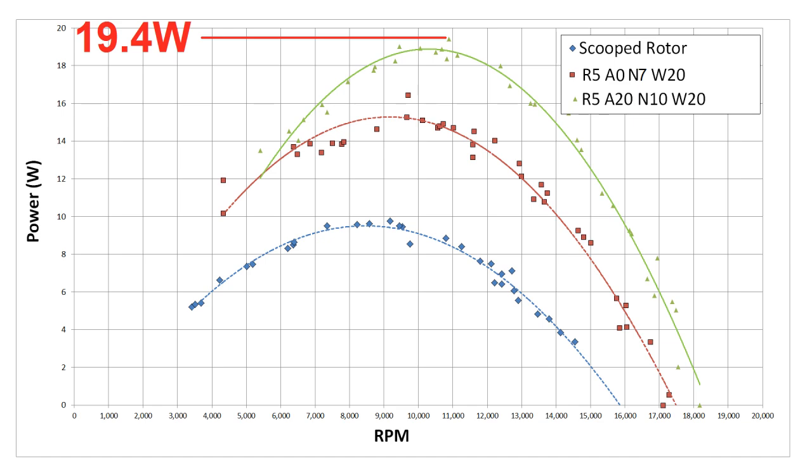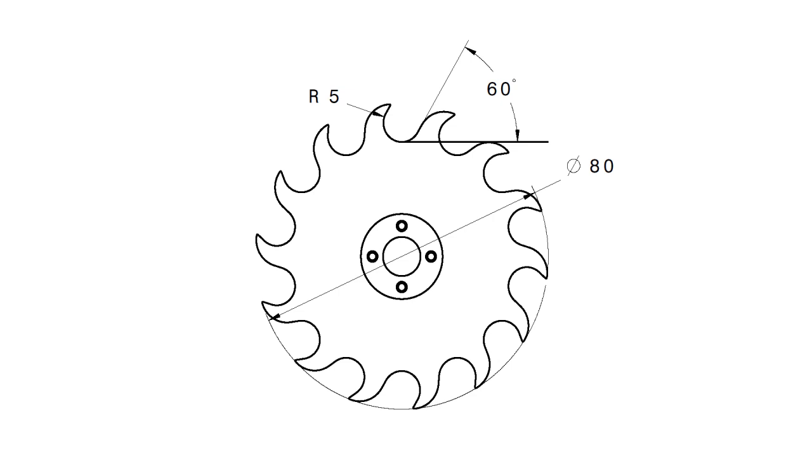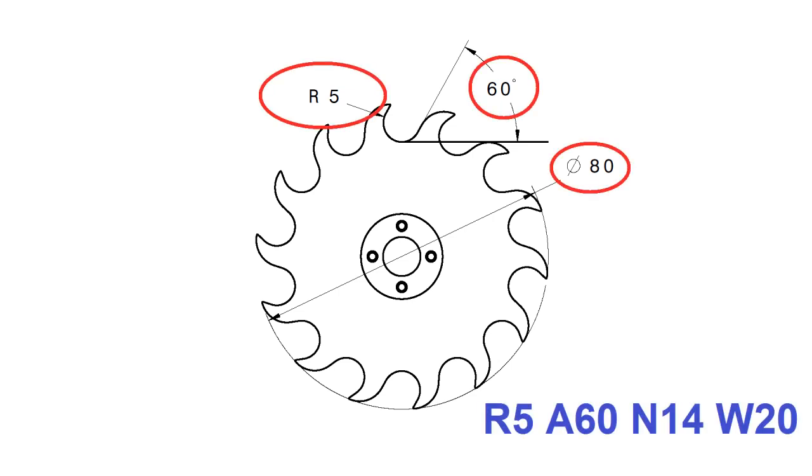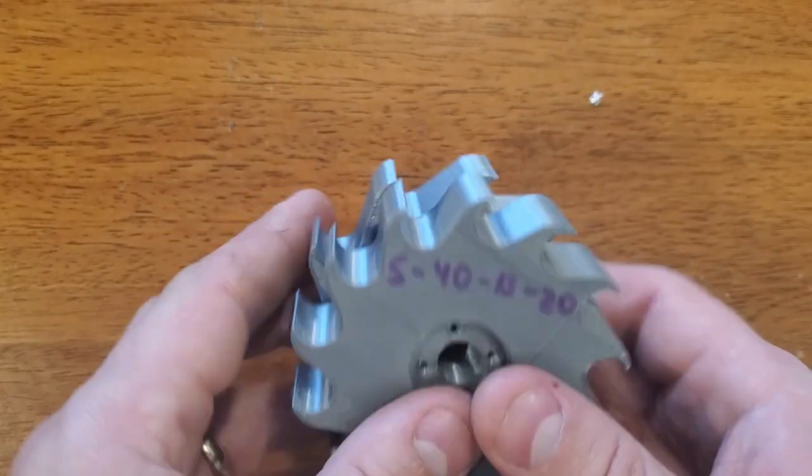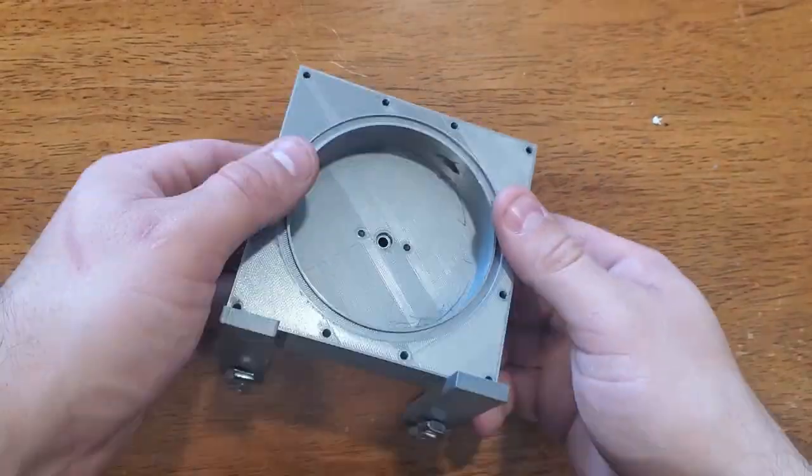So naturally I figured it only made sense to test with even more blades, so the next one I did was a 14-bladed design with a 60 degree notch angle. The notch angles get steeper as the blade count increases, because you start having to cut them radially instead of at a tangent. 14 was about as many as I could fit without moving to a smaller notch radius.